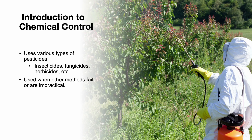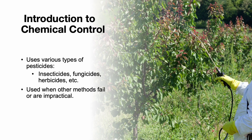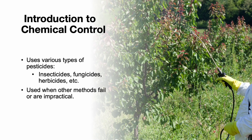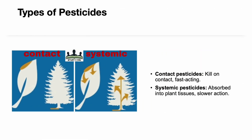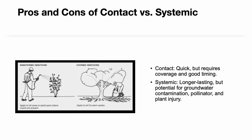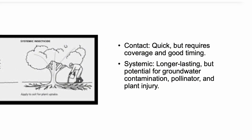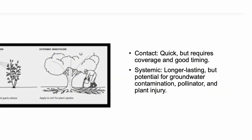Chemical control uses pesticides such as insecticides, miticides, fungicides, and herbicides. It's appropriate when biological or cultural controls aren't effective or practical. However, regulations must always be followed and applicators need to be properly trained and licensed. Pesticides are either contact — killing pests on contact — or systemic, meaning they're absorbed into plant tissue. Systemic products can treat pests like borers and leaf miners but take longer to work. Contact pesticides act faster but require thorough coverage and good timing. Contact products may be less effective in dense vegetation or under rainy conditions. Systemic applications by injection may minimize above-ground exposure but could risk groundwater contamination or plant injury, especially in drought-stressed trees.